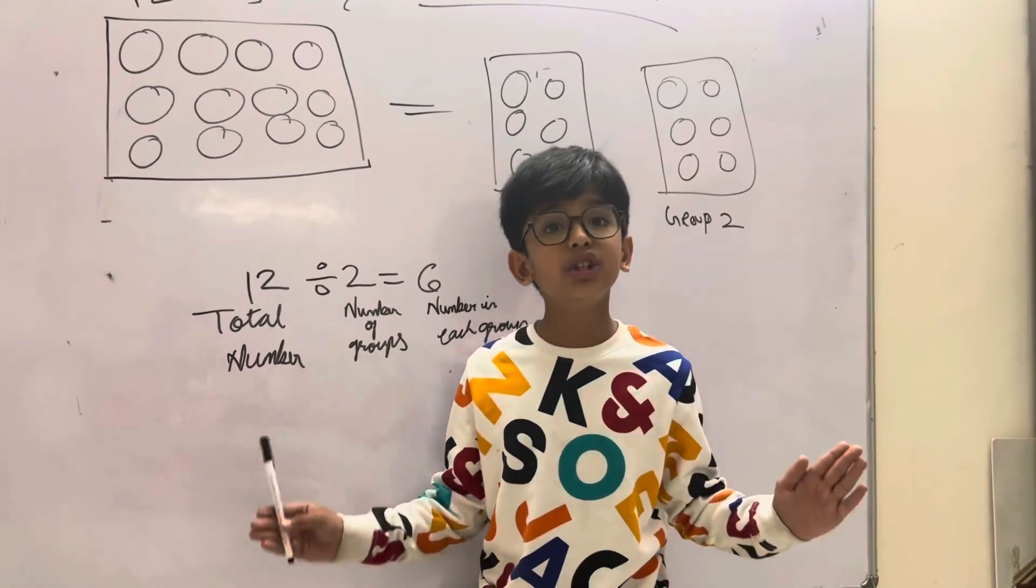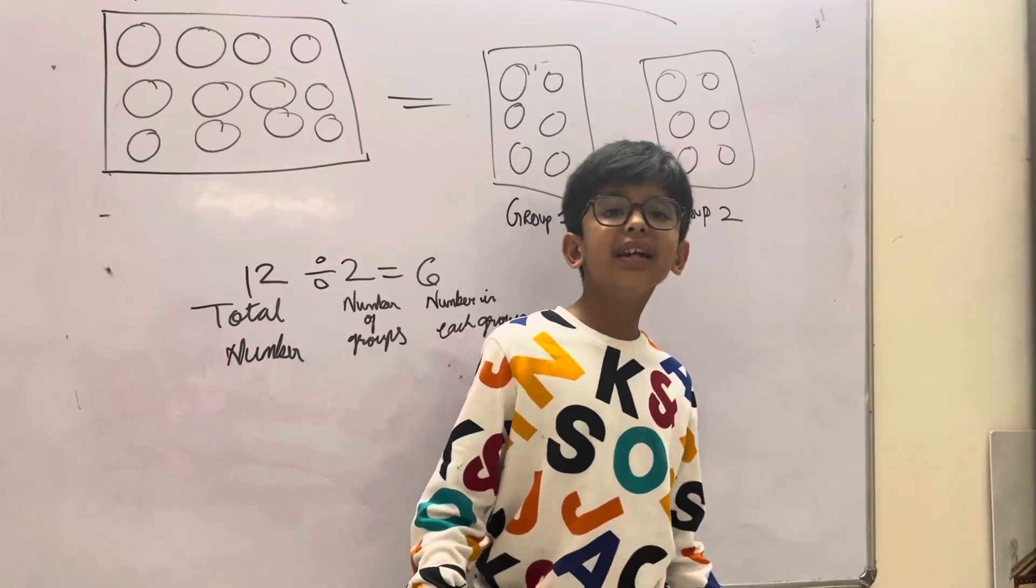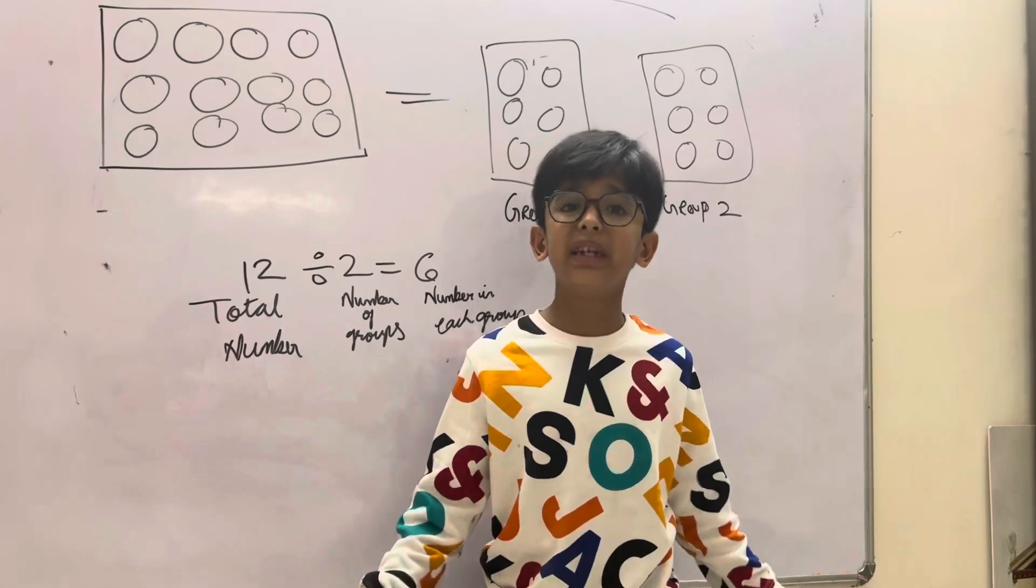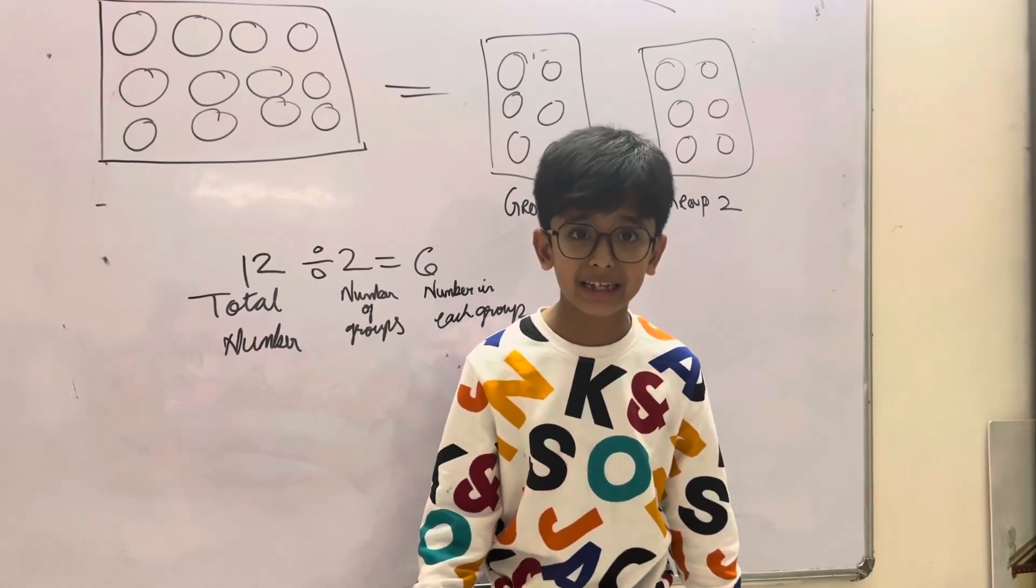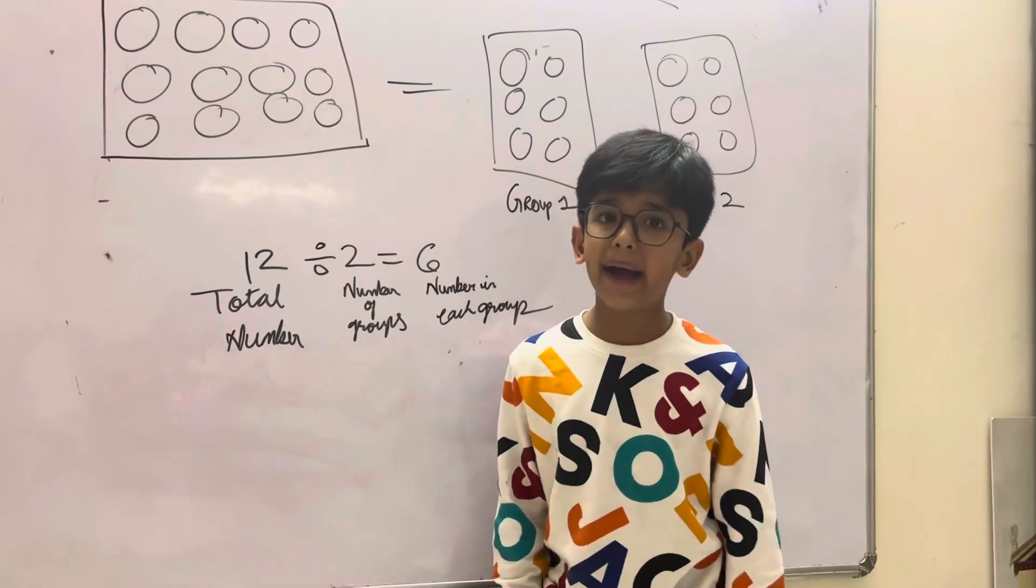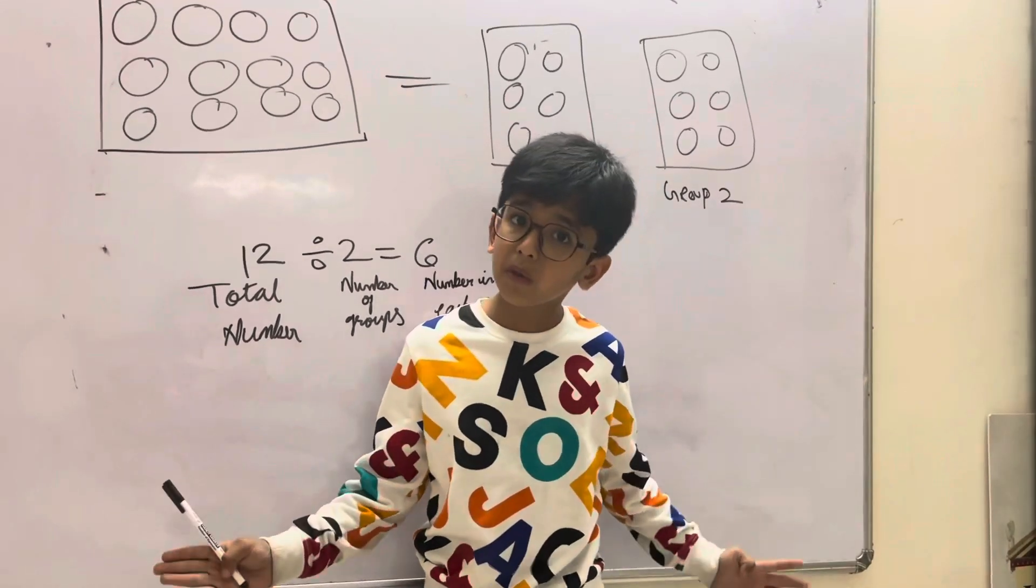It is the result of fair sharing. Division is a mathematical operation opposite of multiplication, to find how many equal groups there are.